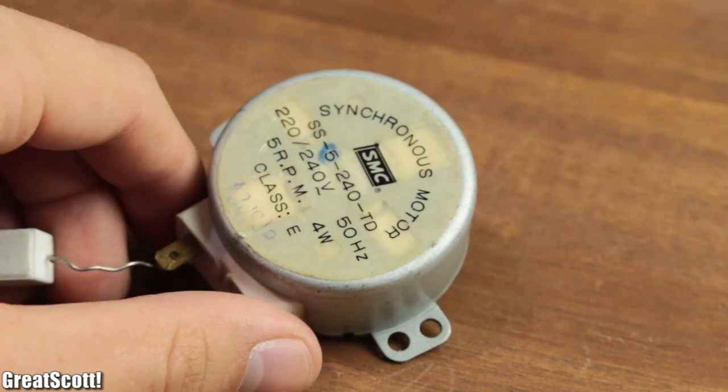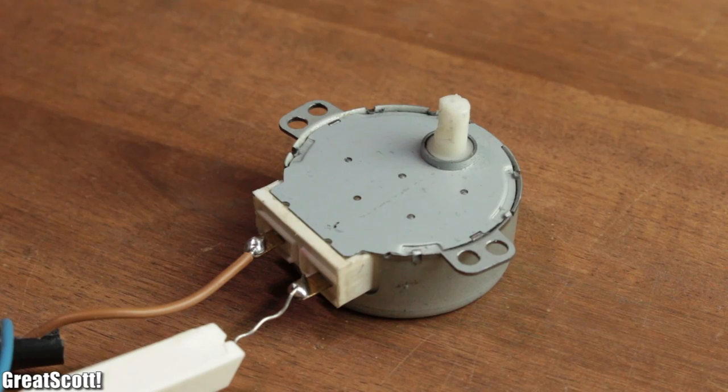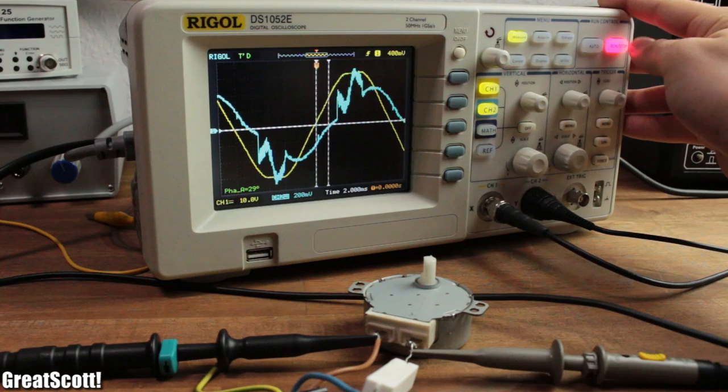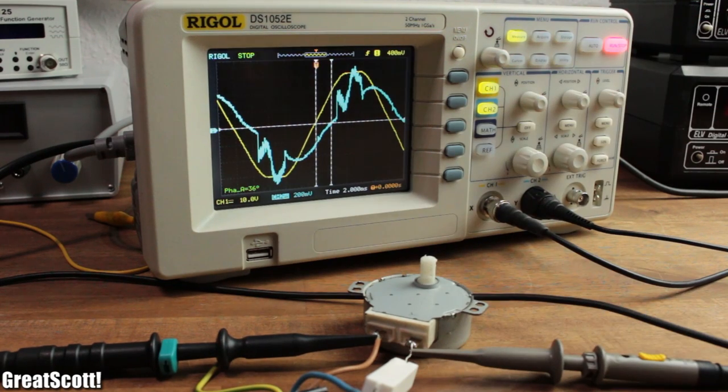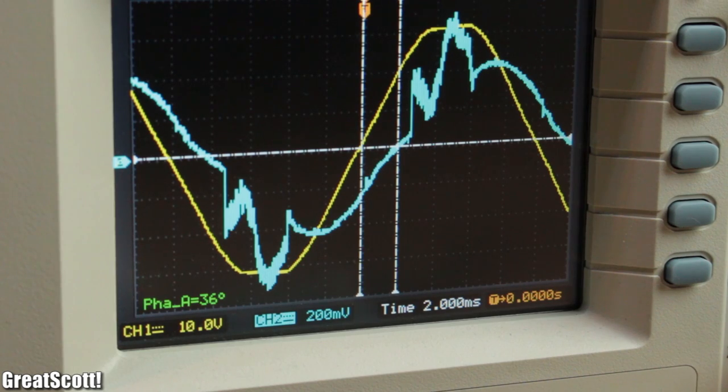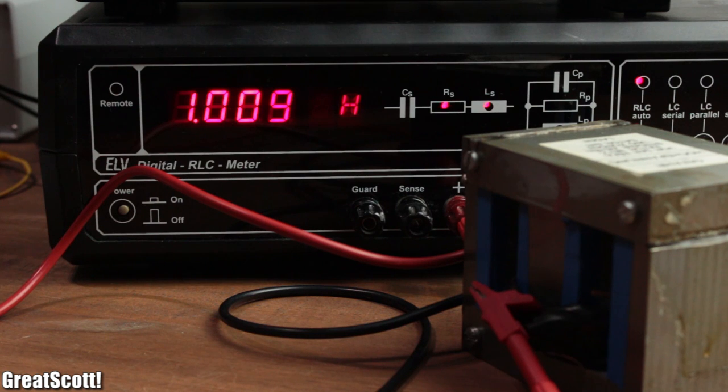Another example for this would be the small microwave motor, which as you can see is an inductive load because it creates a phase shift of around 36 degrees.